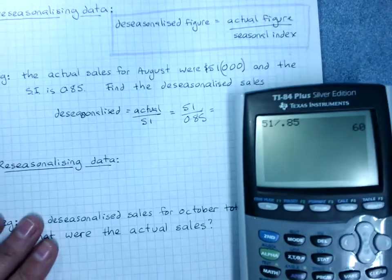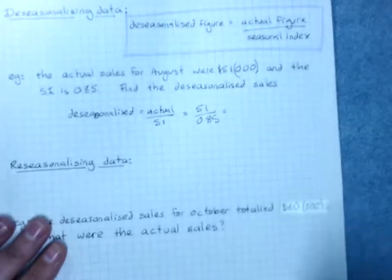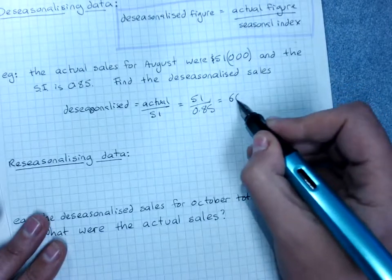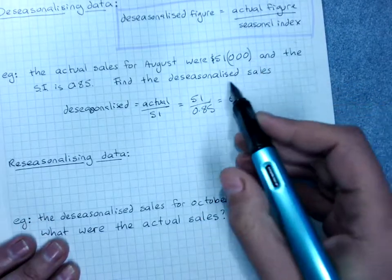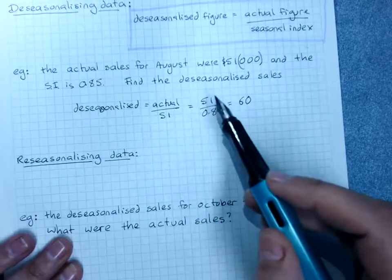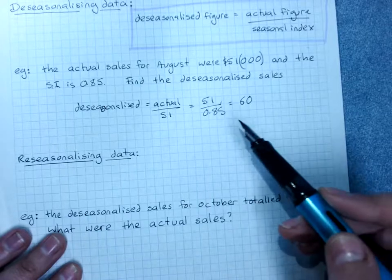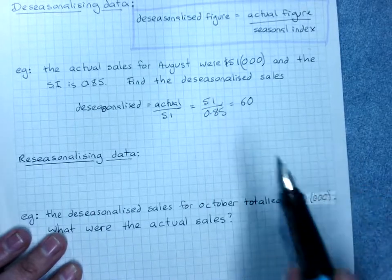So the de-seasonalized sales - my bad - was 60. That is, without all the variation they would have sold 60,000, but with the variation it was lower because it was in winter.